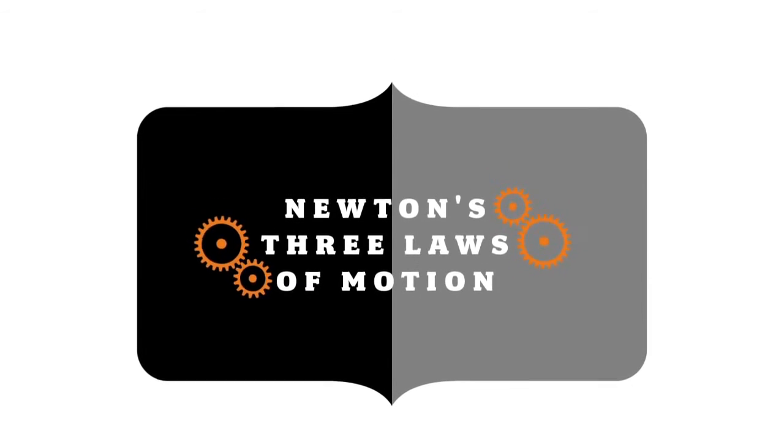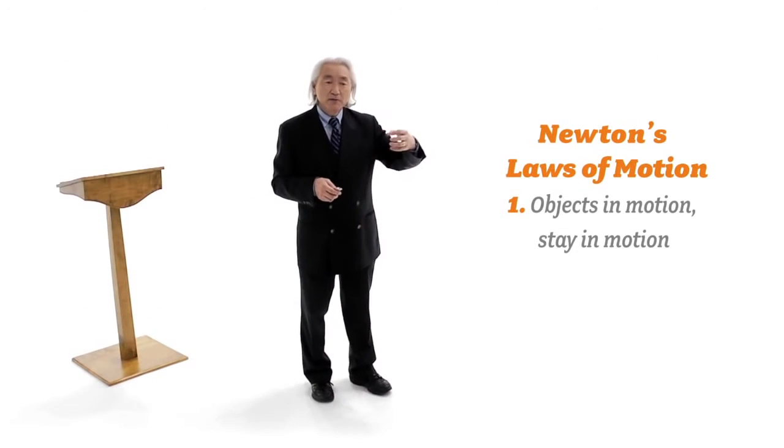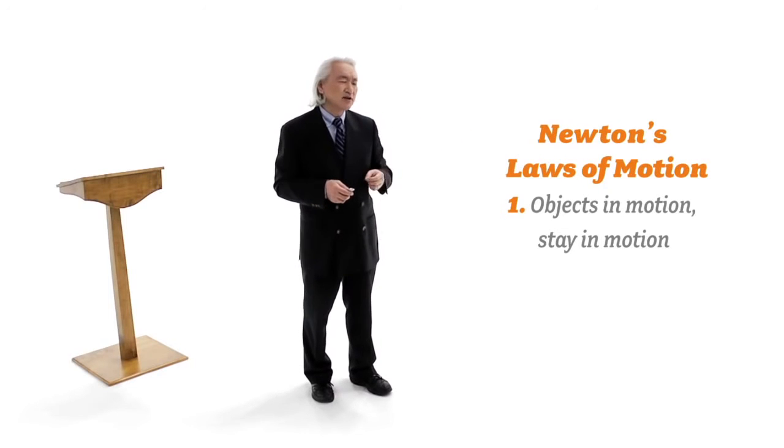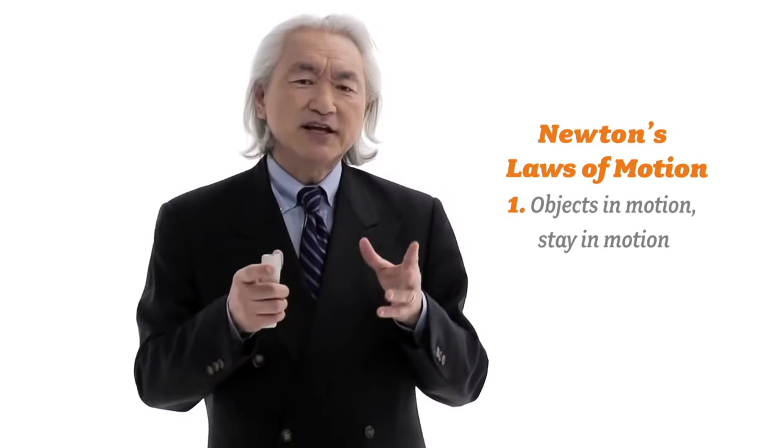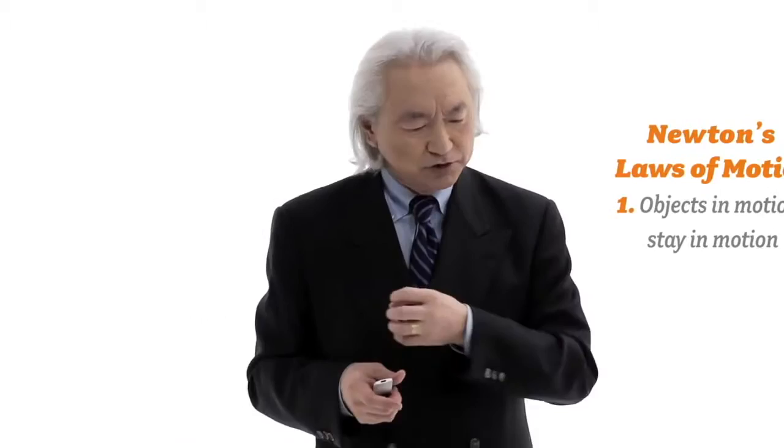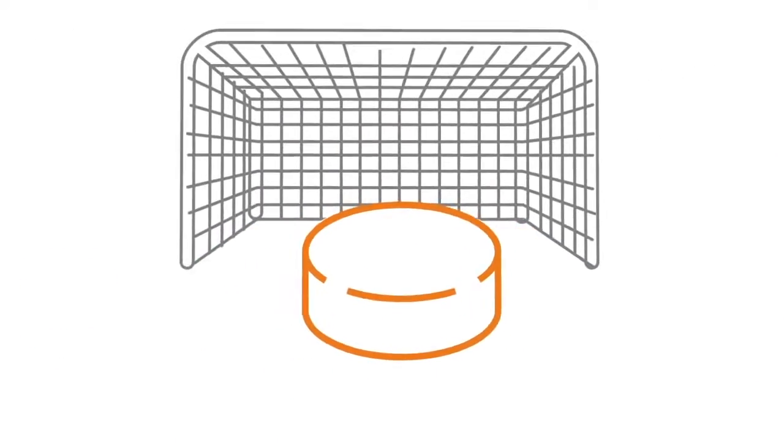The first law of motion says that objects in motion stay in motion forever unless acted on by an outside force. You see that in an ice skating rink. You shoot a puck and it goes all the way down forever unless acted on by an outside force. That's different from Aristotle's law of motion.